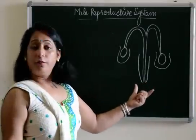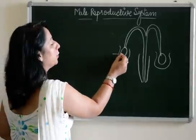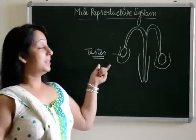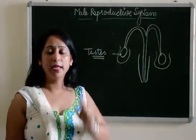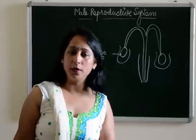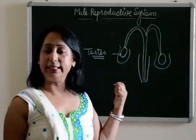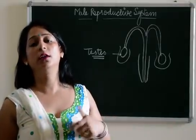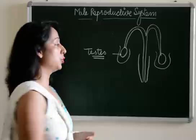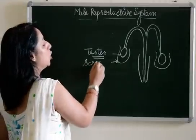I'll be taking up each part one by one. The first part we are going to deal with is the testes. Testes are the parts of the male reproductive system which are mainly responsible for the production or formation of sperms. The testes are enclosed in a thin skin-like structure known as the scrotum.